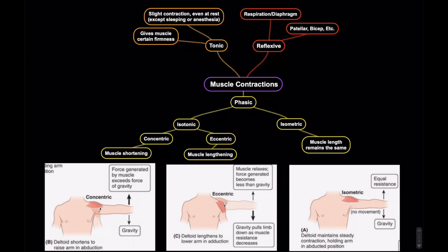In this video we're quickly going to go over muscle contractions. There are basically three kinds of contractions when we're talking about muscles: tonic contractions, reflexive contractions, and phasic contractions.